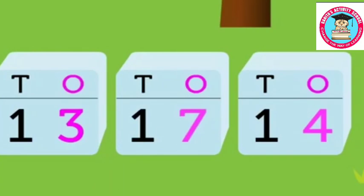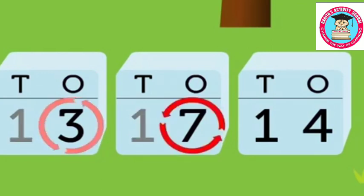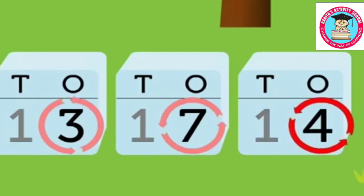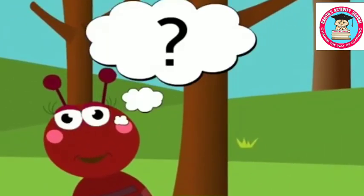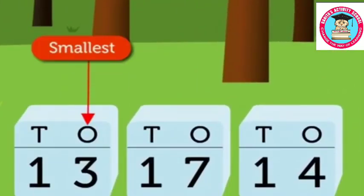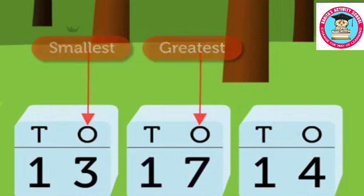Let's compare the ones in each number: 1 ten and 3 ones in 13, 7 ones in 17, and 4 ones in 14. So which is the smallest and greatest? The smallest is 3 ones in 13, then 4 ones in 14, then 7 ones in 17. The ascending order is 13, 14, 17.